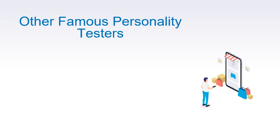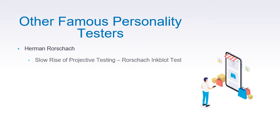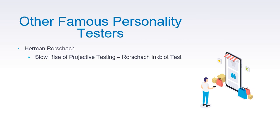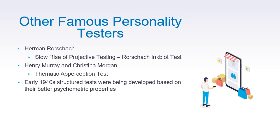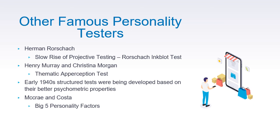During the psychological testing movement, there were also famous personality testers. Herman Rorschach gave rise to projective testing and devised the famous Rorschach inkblot test. Henry Murray and Cristina Morgan pioneered the Thematic Apperception Test. During the early 1940s, structured tests were developed based on better psychometric properties. McCrae and Costa pioneered the Big Five personality factors — broad personality traits described as extraversion, agreeableness, openness, conscientiousness, and neuroticism.